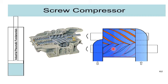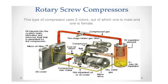The male rotor is the driver and the female rotor is the driven. The lobes exactly mesh with the gullies. The two rotors are in mesh with each other. There are no suction and discharge valves. The gap between the casing and rotor is called a pocket. The pocket size goes on reducing from the inlet towards the outlet.